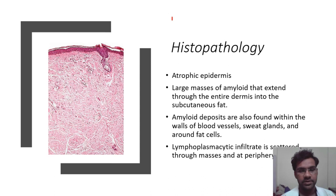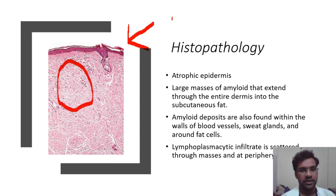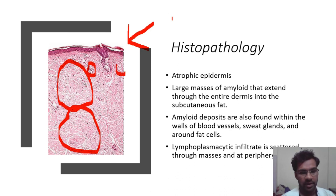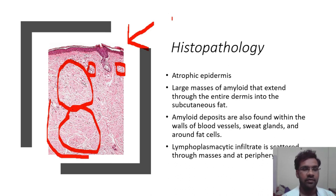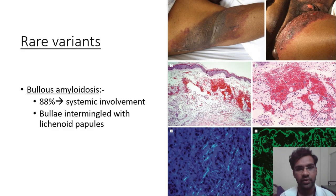Histopathology of nodular amyloidosis: the epidermis is atrophic. There is extensive amyloid deposition present in the dermis extending into the subcutaneous plane. Structures like blood vessels and sweat glands also contain amyloid pigment. Lymphoplasmacytic infiltrates are usually present in the periphery of the deposits.